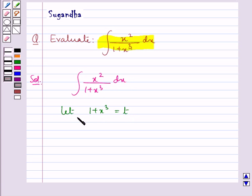On differentiating both sides we get 3x squared dx is equal to dt. This gives us x squared dx is equal to 1 upon 3 dt.